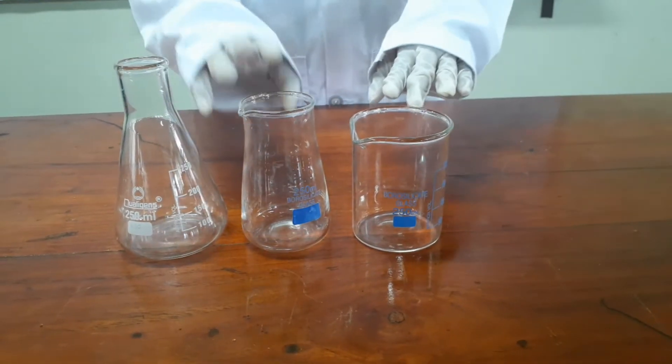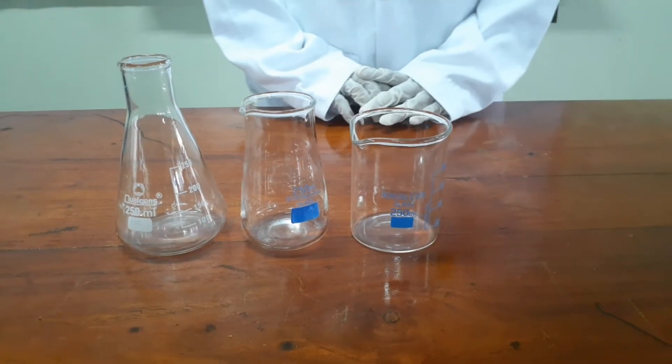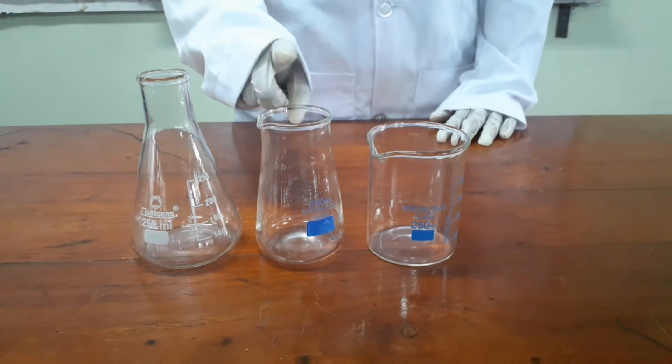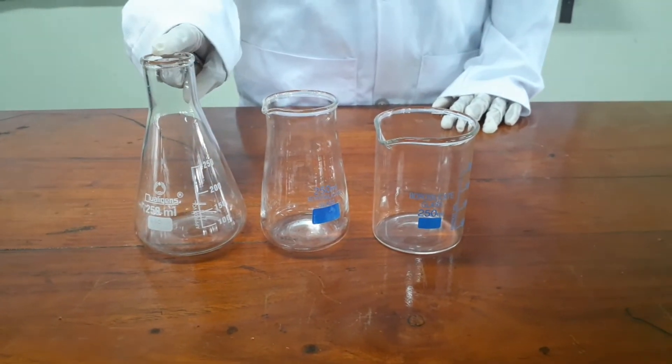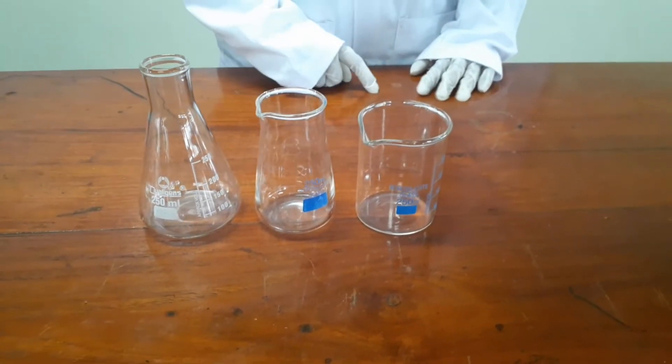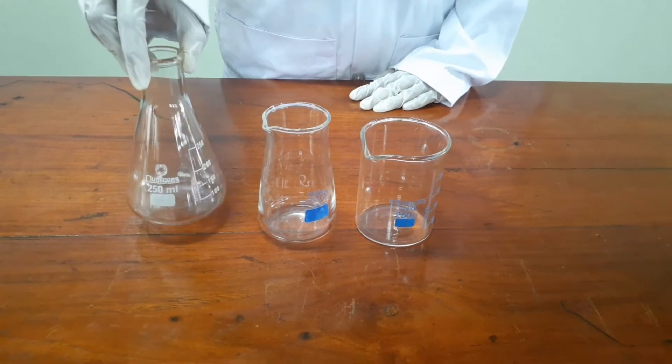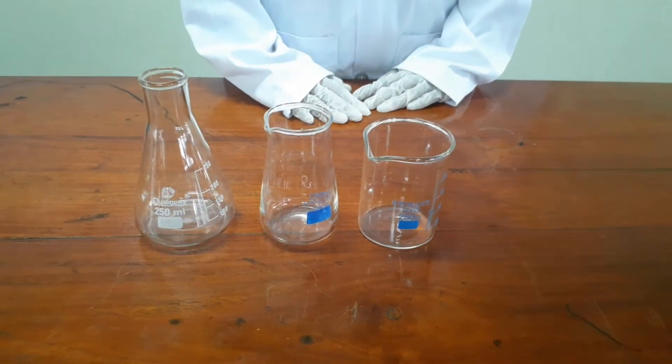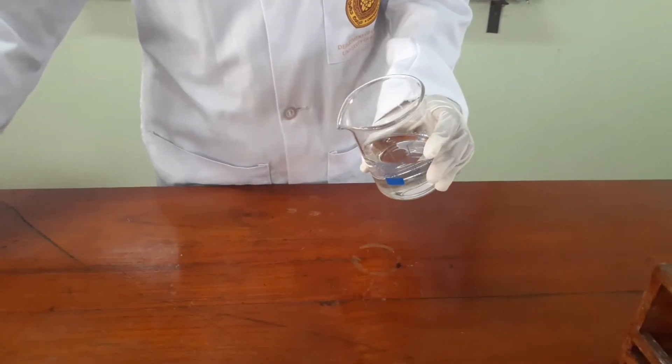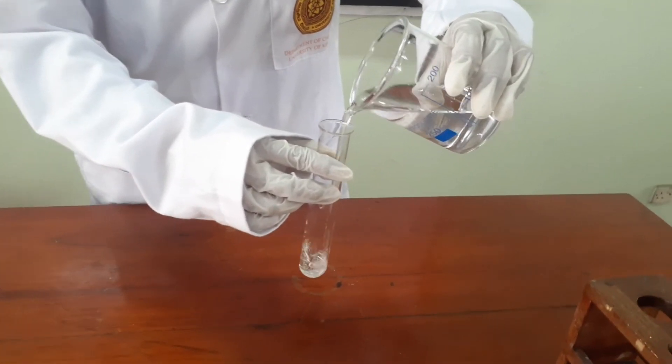Those are the different types of beakers and flasks that we use in the lab. This is the beaker. This is the conical flask. And this is the Erlenmeyer flask. This is also known as titration flask. However, nowadays most of the people use Erlenmeyer flask for titrations. Beaker has a conical end. Therefore, we use beakers to pour a solution to another glassware.